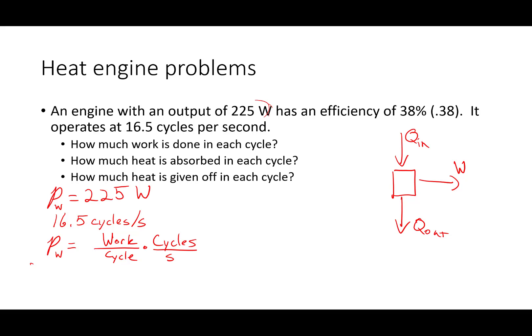So I can plug those in to find the work done per cycle. What I get is, left side is 225 watts equals work per cycle times 16.5 cycles per second. So I just divide 225 over 16.5 to get my work per cycle. 225 over 16.5. And I get 13.6 joules. So that's going to be my work output, 13.6 joules.